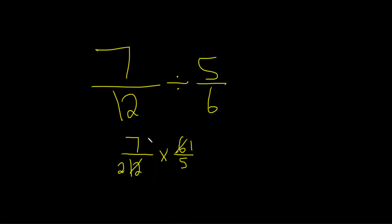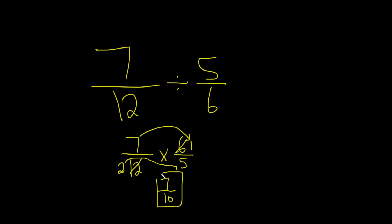Now let's go ahead and multiply straight across. 7 times 1 is equal to 7, over 2 times 5 is equal to 10. That would be the final answer. Remember, division is multiplication by the reciprocal.